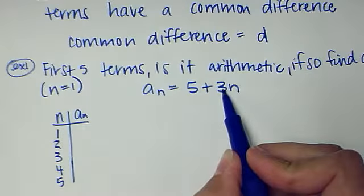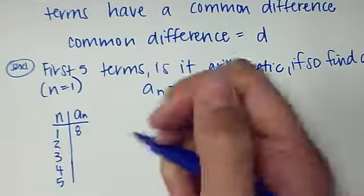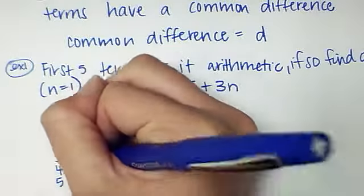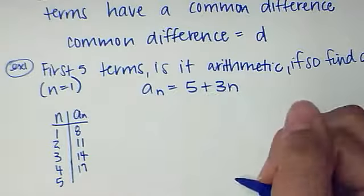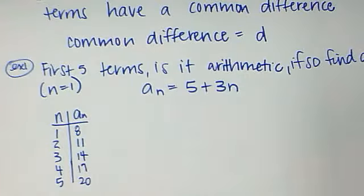If I do one, one times three is three, plus five is eight. Two times three is six, plus five is eleven. Three times three is nine, plus five is fourteen. Four times three is twelve, plus five is seventeen. And five times three is fifteen, plus five is twenty.